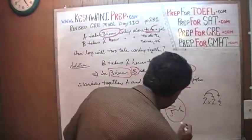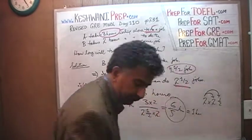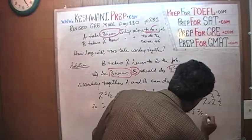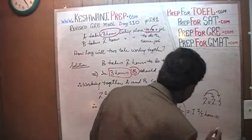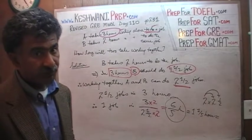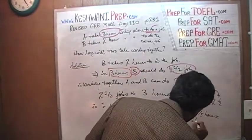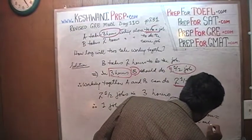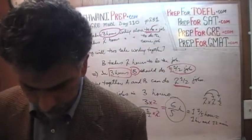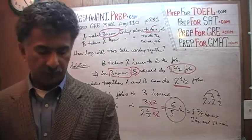Six fifths of an hour is the same as one and one-fifth of an hour. A tenth of an hour is six minutes, so a fifth of an hour is twelve minutes. That means the answer is one hour and twelve minutes — that is how long they will take working together.